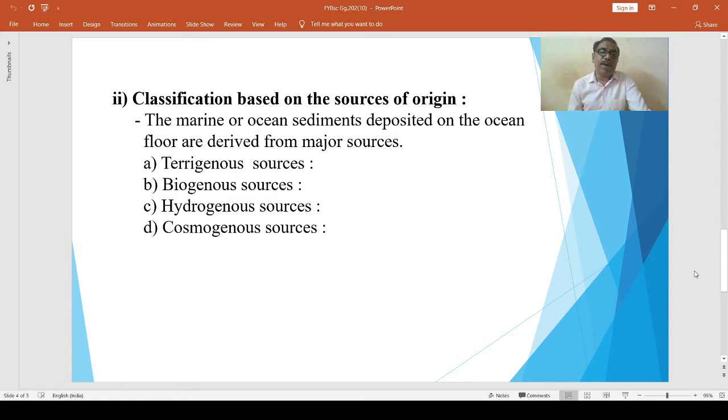Transportation of particles of different size depends on the strength of the waves and the ocean currents. On the basis of texture, mode of transportation, and chemical properties, the terrigenous materials are broadly divided into gravel, sand, and mud or clay.